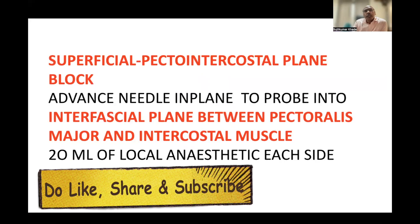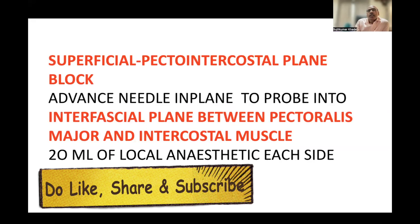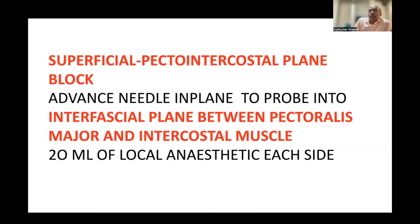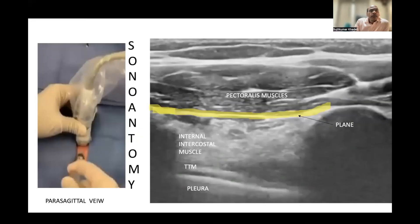For the pectoral intercostal fascial plane block — which is a superficial block — the needle is advanced in-plane to the probe into the interfascial plane between the pectoralis major and the internal intercostal muscle. This is the parasagittal view with the probe placed lateral to the sternum. In the sonoanatomy: this is pectoralis major, this is the internal intercostal muscle, these are the rib shadows, this is the pleura, and this is the transverse thoracic muscle. The needle is advanced through pectoralis major to this plane.